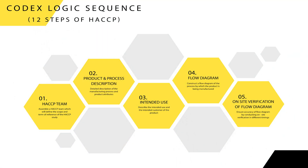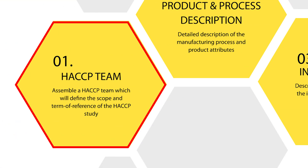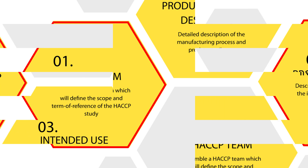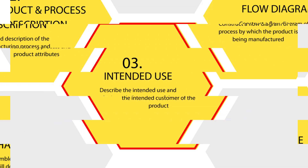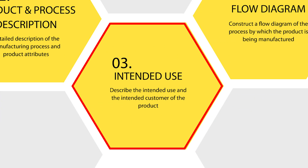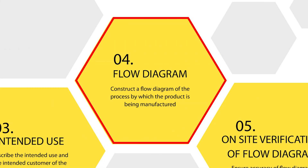The first step is to assemble a proper HACCP team, which will define the scope of the study and the terms of reference. The second step is to have a proper product or process description. The third step is to identify the customer and the intended use of the product.